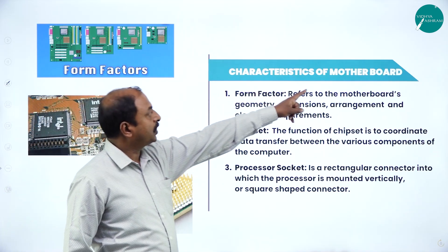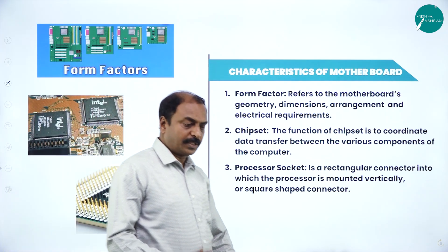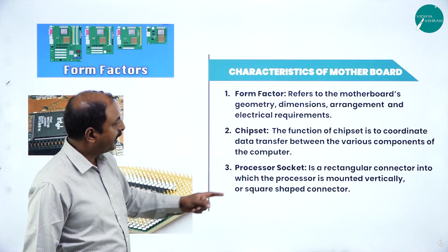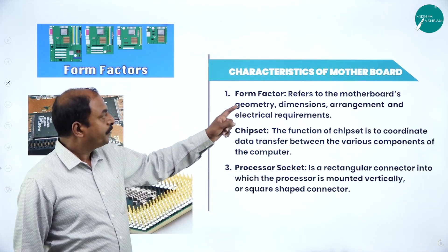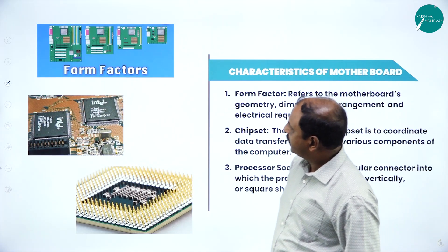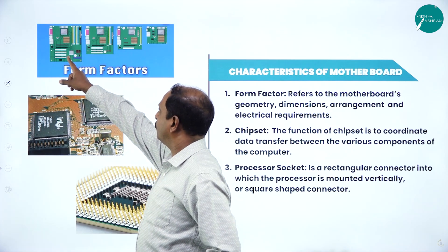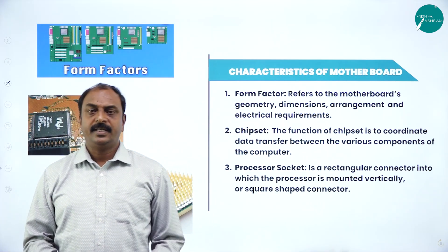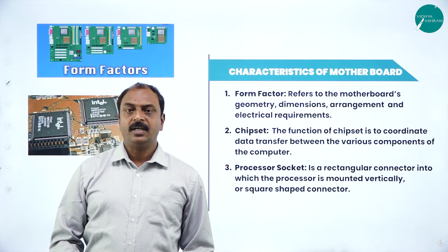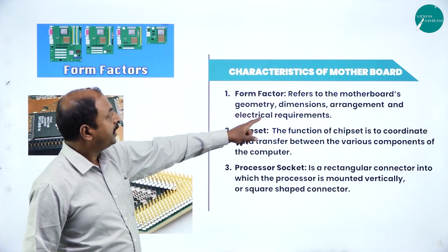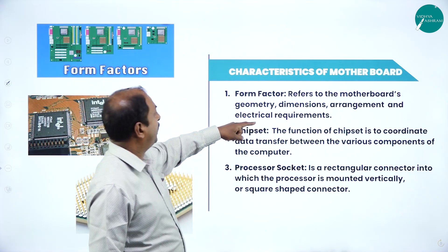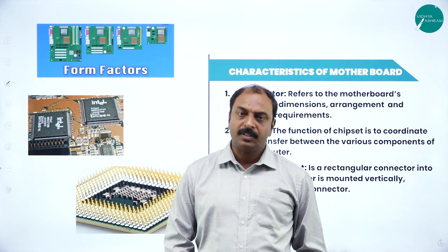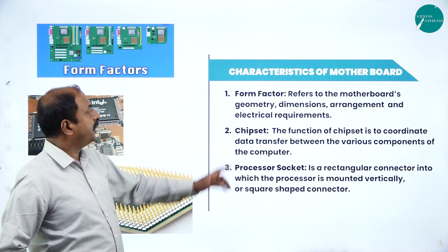Now let us see what are the characteristics of the motherboard. A motherboard is characterized by three factors: form factor, chipset, and processor socket. Form factor refers to the size and shape of the motherboard and which electronic components are to be mounted on it. It refers to the motherboard's geometry, dimensions, electrical arrangement, and electrical requirements — what hardware should be mounted on the motherboard and at what exact location.